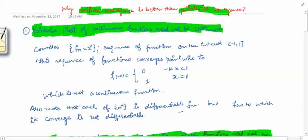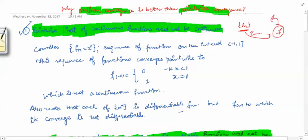The first drawback of pointwise convergence is that if you have a sequence of continuous functions — say fn is a sequence of continuous functions and it pointwise converges to f — then it is not necessary that f is a continuous function. The continuity property, which is important in mathematics, is not preserved when the sequence converges pointwise.